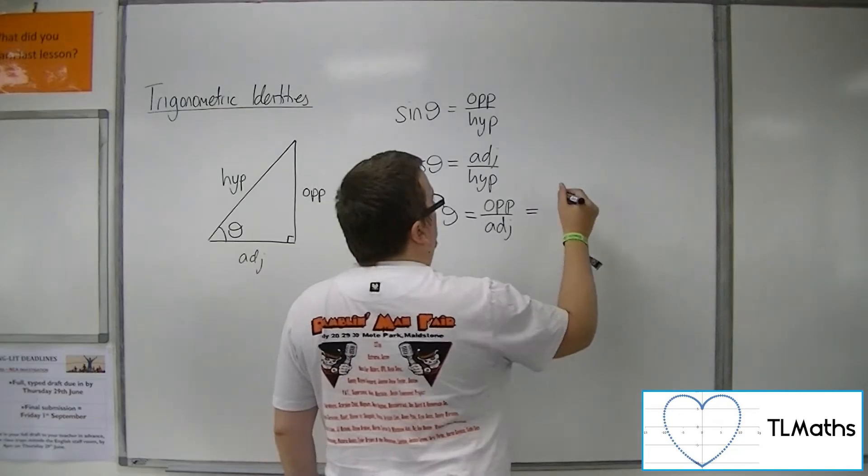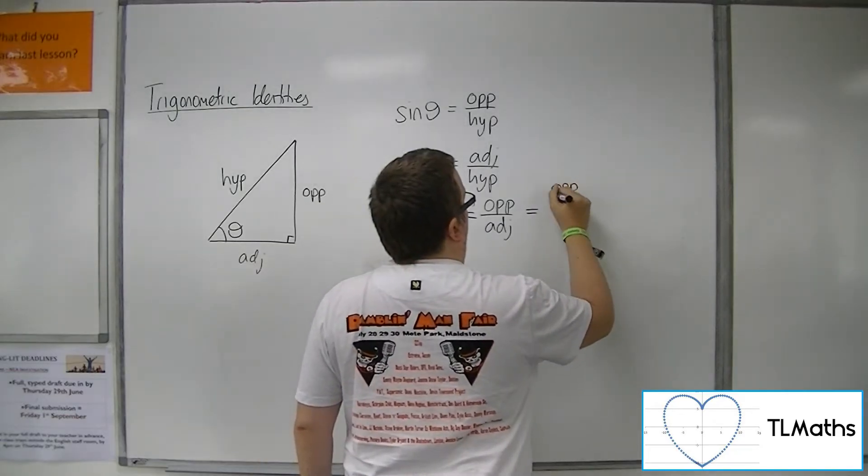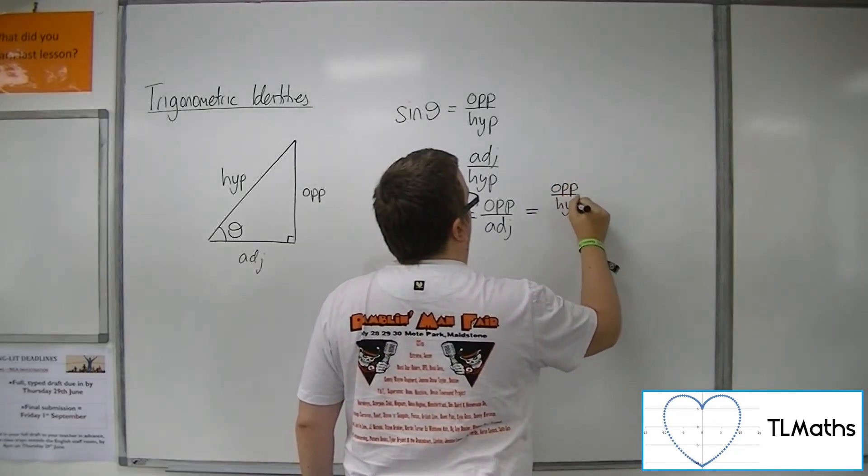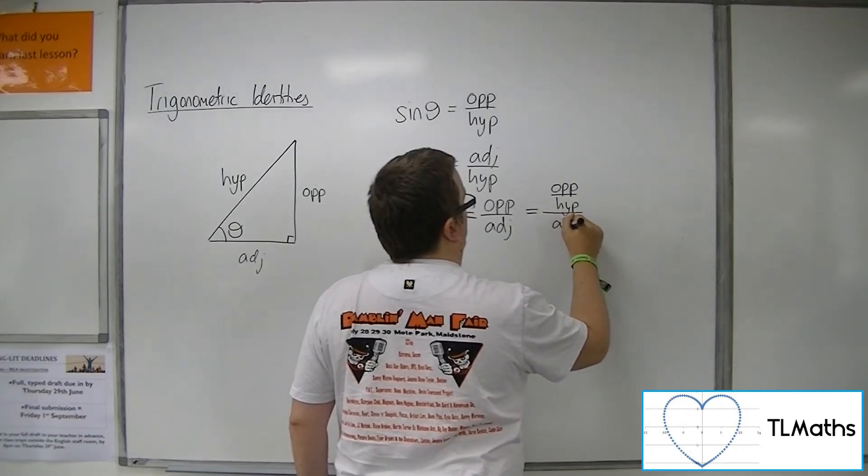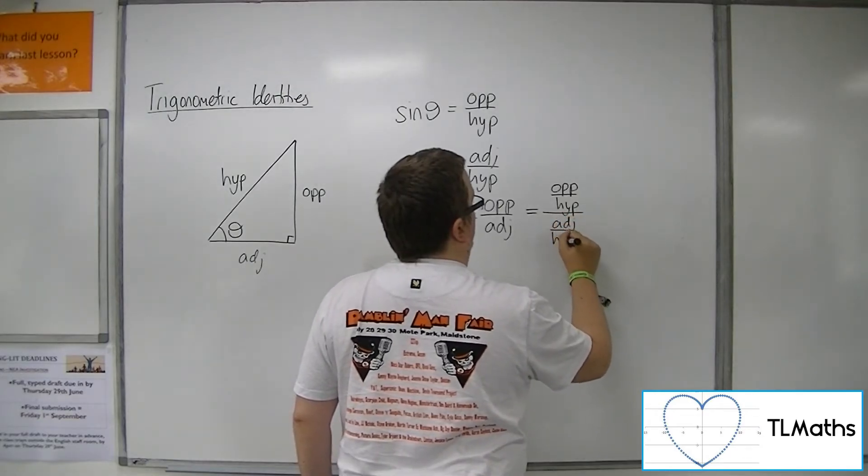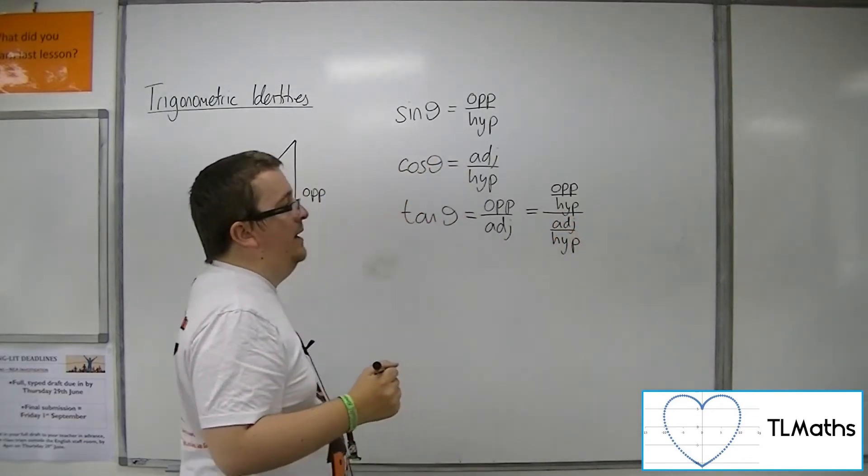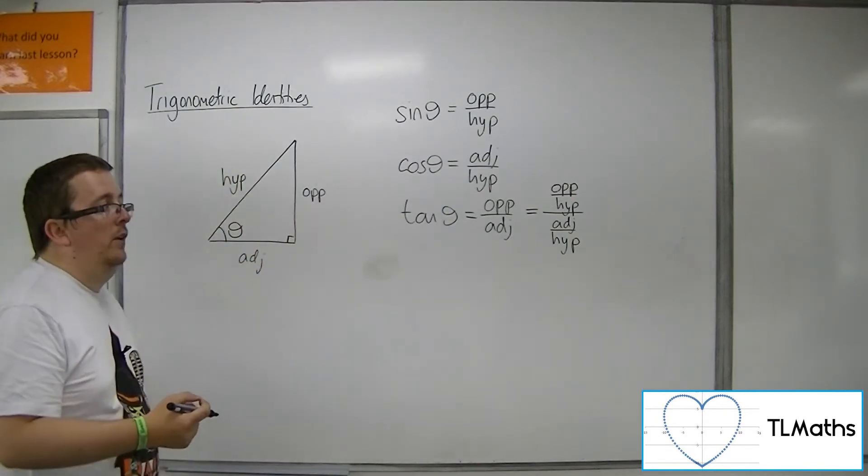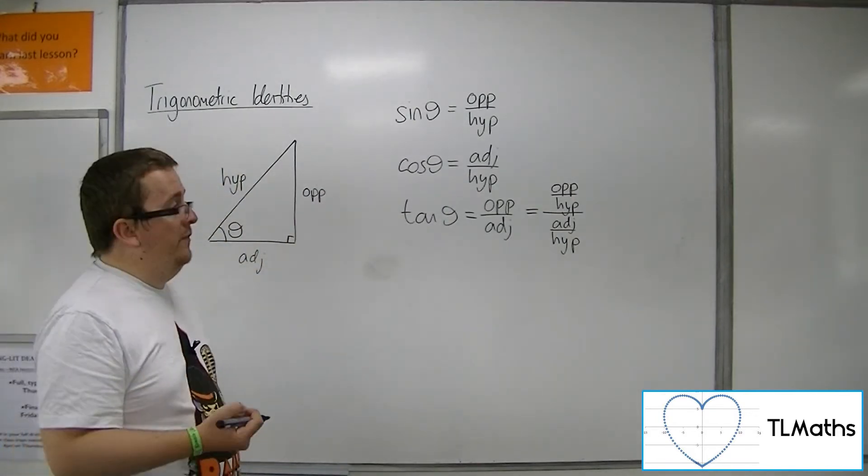So if I divide top and bottom of this fraction by the hypotenuse, which maintains the fraction—perfectly fine, equivalent fraction—